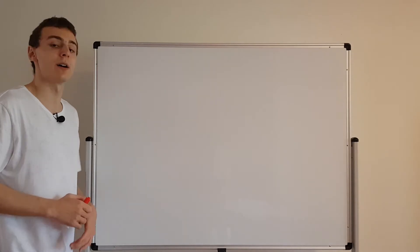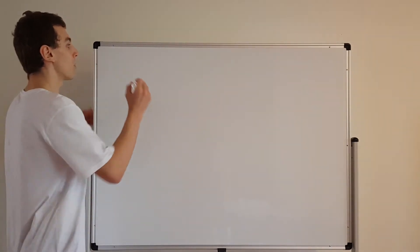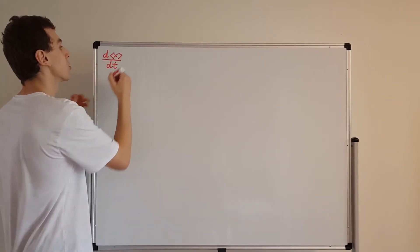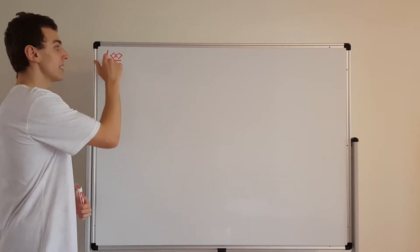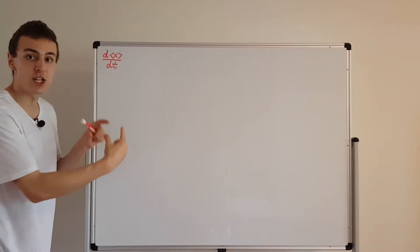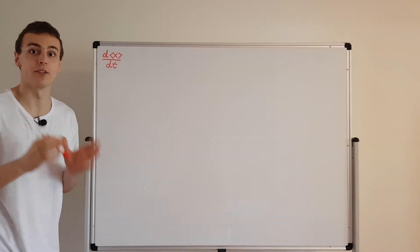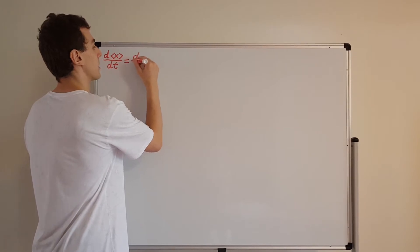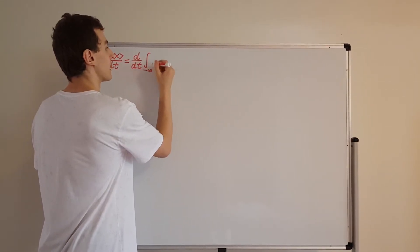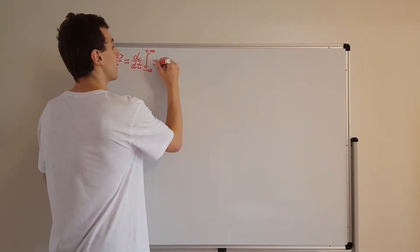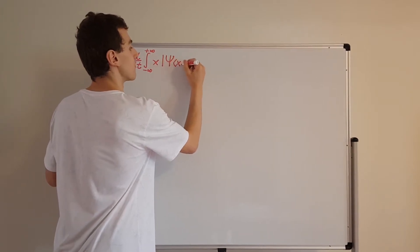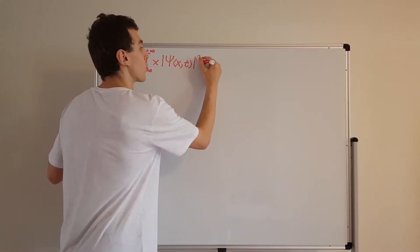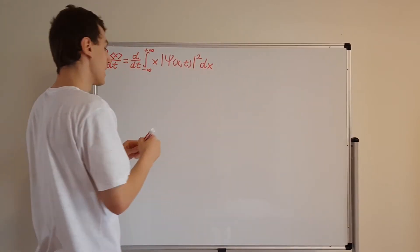This derivation is very important when we're talking about momentum in quantum mechanics. We want to look at the time derivative of the expectation value of x. This is the total derivative with respect to time, and these angle brackets denote the expectation value of x, where x is our position variable. The expectation value is an integral from minus infinity to plus infinity of x times the probability density function, given by the magnitude of the wave function squared, integrated with respect to x.